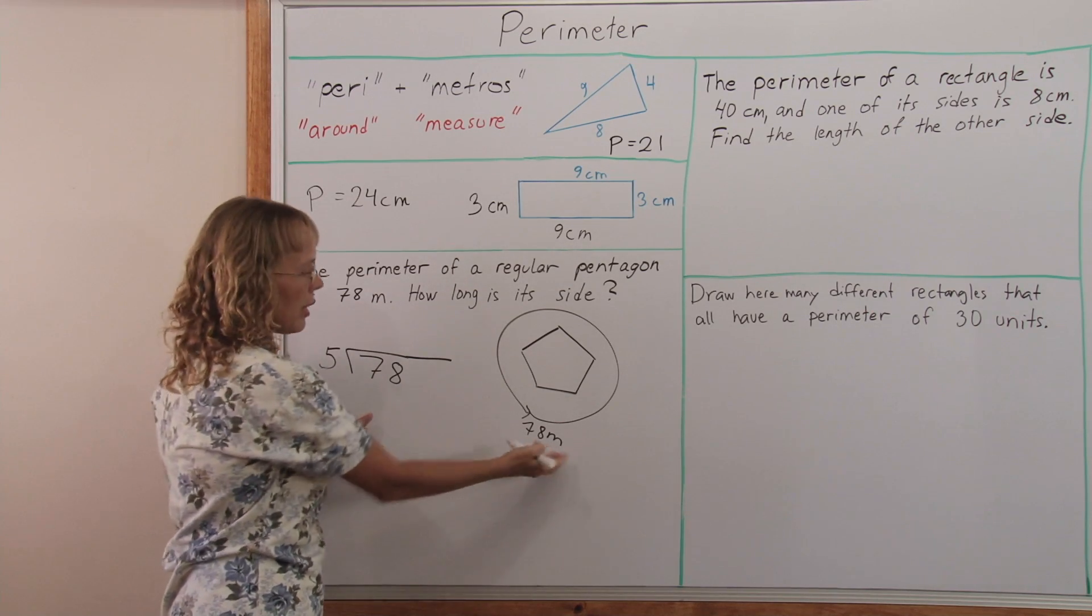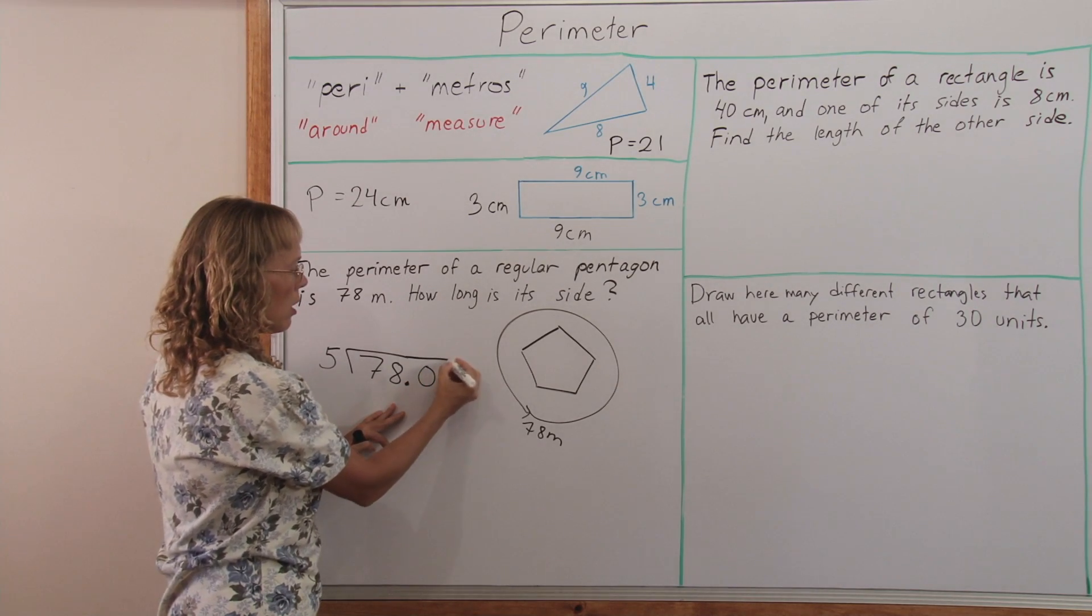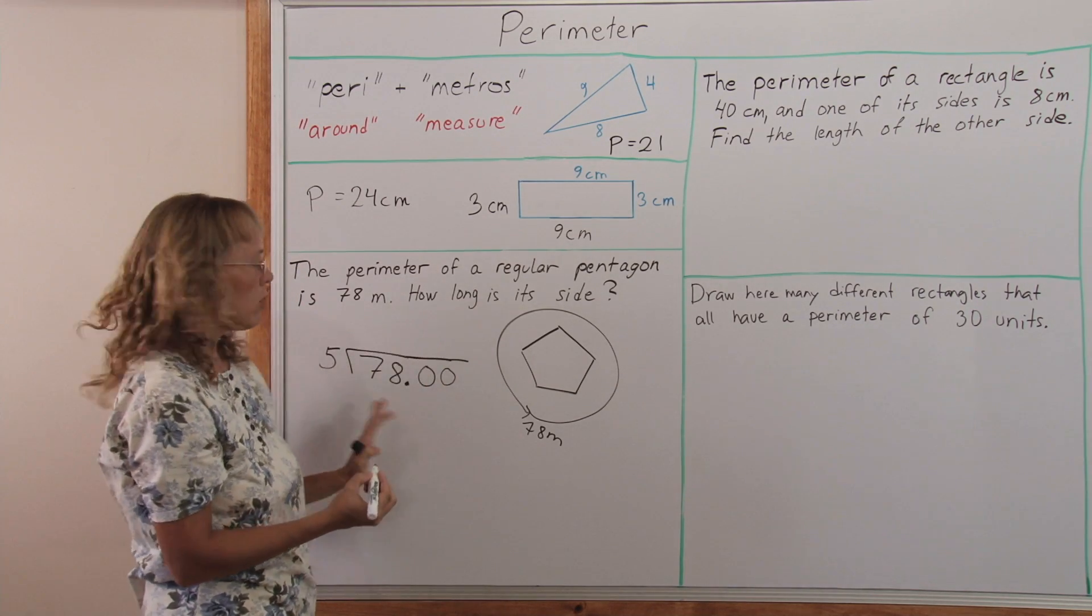But I chose this one to show that even if it looks like it's not divisible by 5, because in real life you might have such a figure, then we just add a decimal point, decimal zeros, and we can continue the division to decimal numbers.